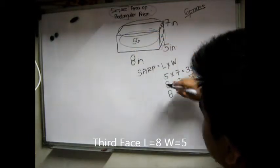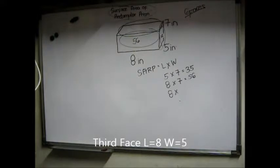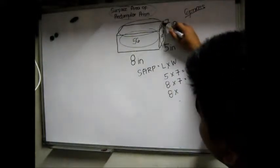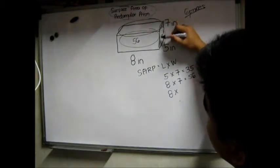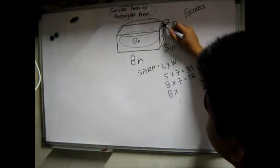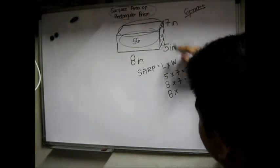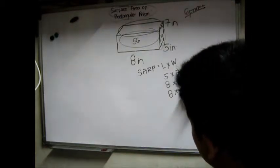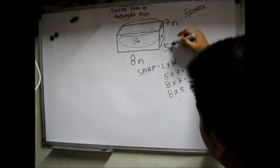Which is 8 inches multiplied by the width, which is this. They have the same, so the size of the width of this face is 5. So 8 multiplied by 5 equals 40.